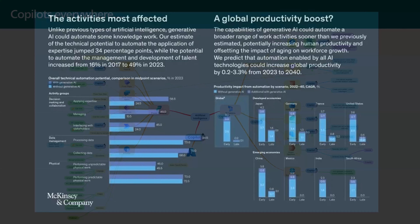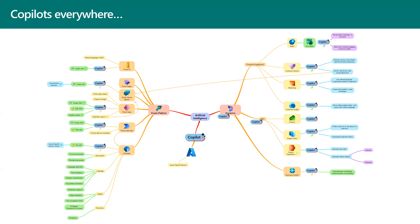Microsoft has placed AI on almost every product in their product lines. Microsoft has introduced co-pilots in a lot of products. As you can see from these slides, AI and co-pilots are on every Power Platform product and on every Dynamics 365 product. AI is on Azure directly now, and Dynamics 365, including Business Central, is starting to embrace this trend, mainly for generative AI features.